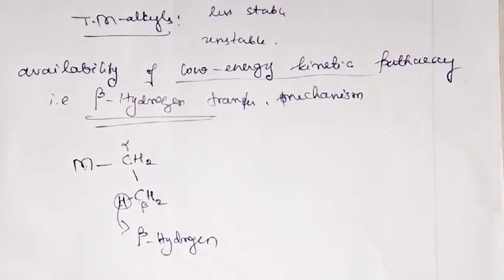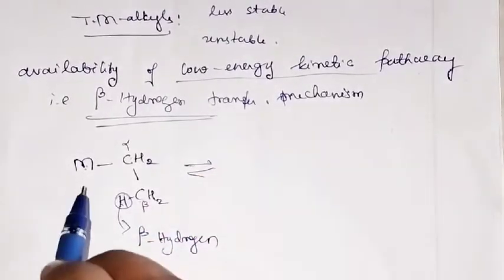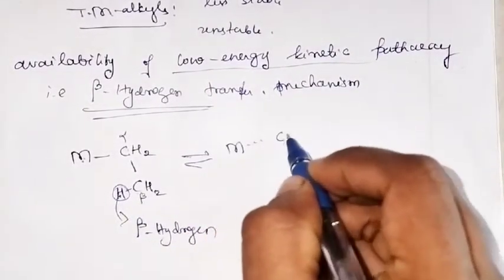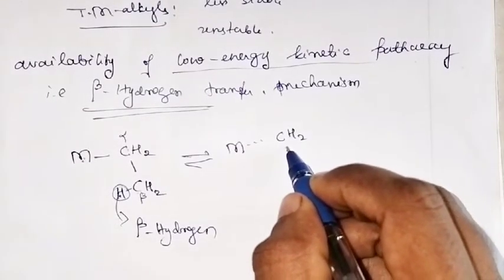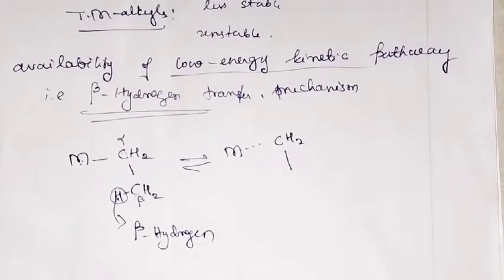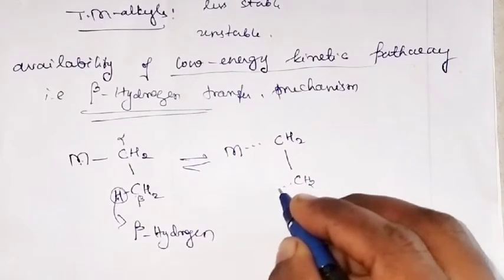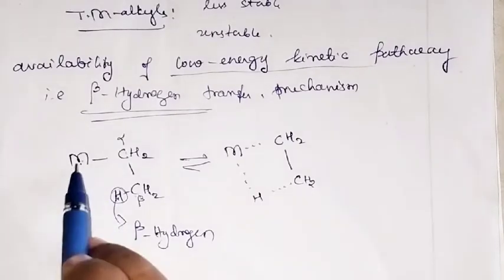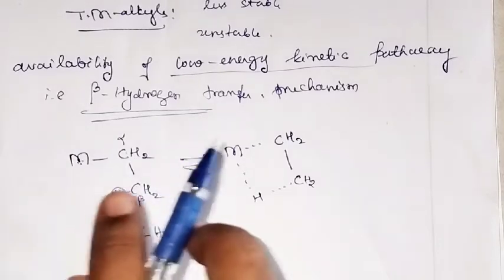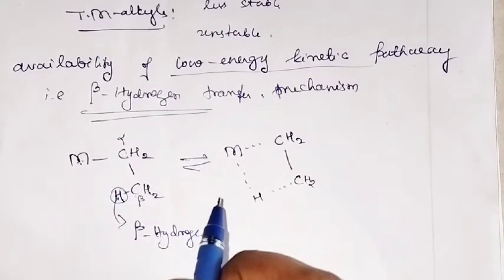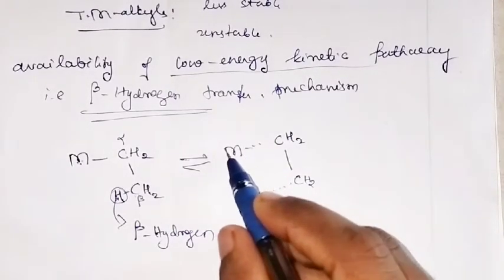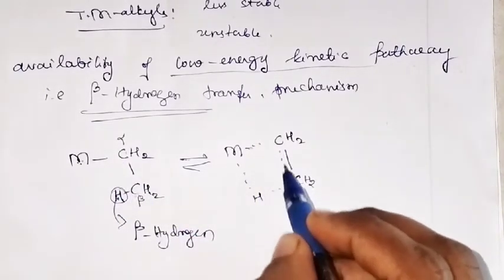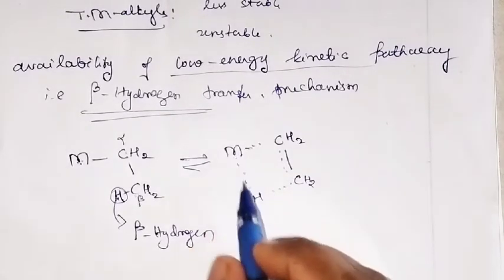When there is a presence of beta hydrogen, there will be an interaction between the metal and this beta hydrogen — shown by a dotted line: M...CH2...H. The interaction occurs between the metal and the beta hydrogen, not with the alpha hydrogen. Because of this, the bond between M and CH2 breaks and there will be formation of a double bond.